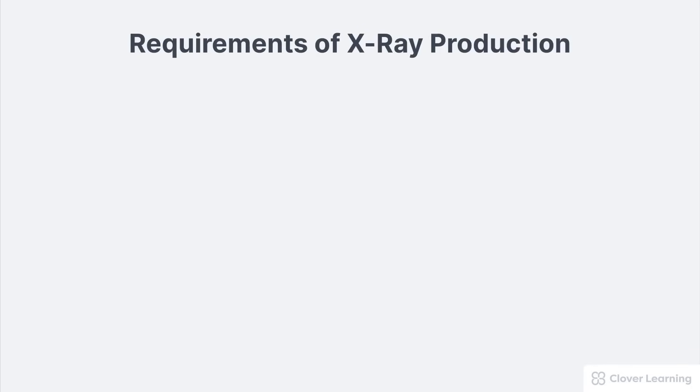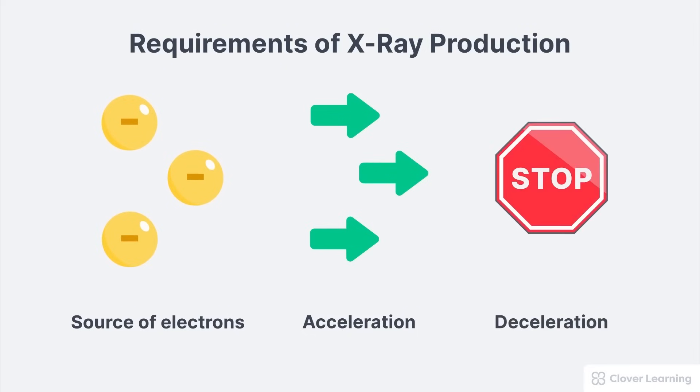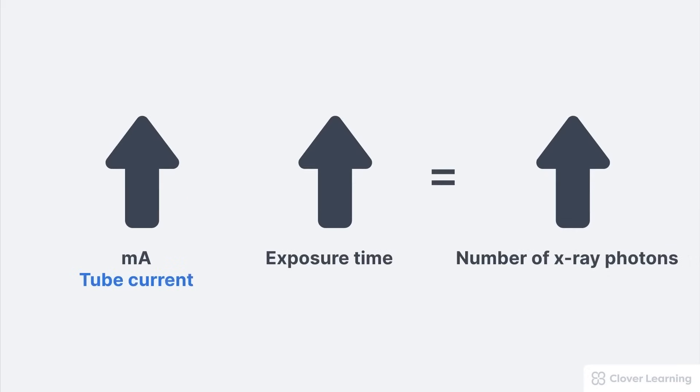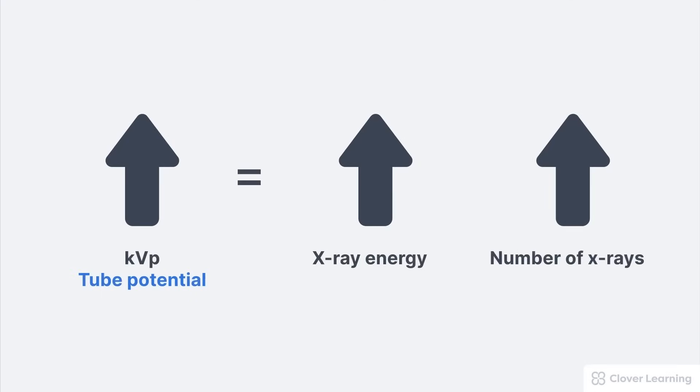In summary, X-rays are not produced by magic or unicorns. X-ray production requires three things: a source of electrons (that's thermionic emission), a means of accelerating the electrons (that's the kVp), and a means of decelerating the electrons (that happens at the anode). mA and exposure time influence the total number of X-rays created. kVp influences both the number and the energy of X-rays created.